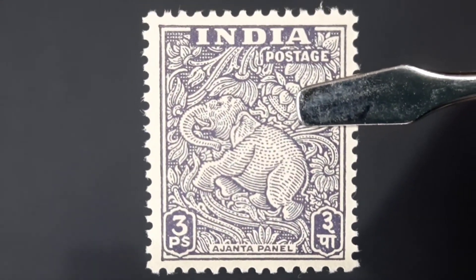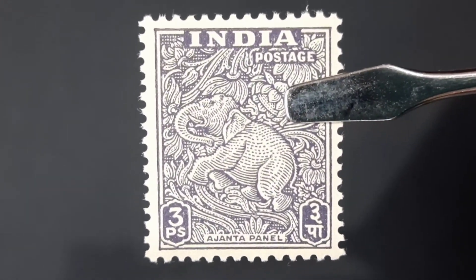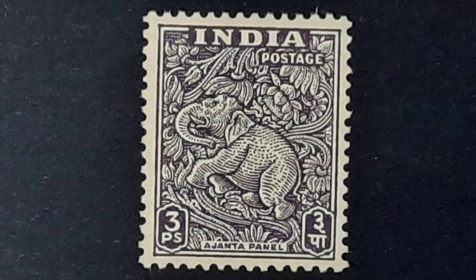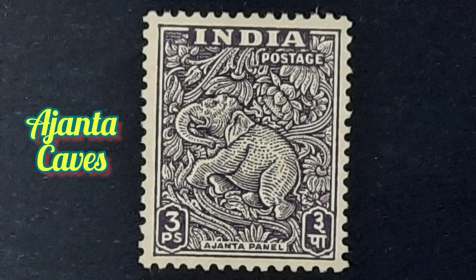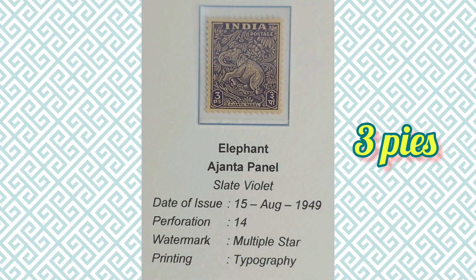The first issue of this series is the three pie stamp. The image depicted in this stamp is an elephant panel from the famous Ajanta Caves, which are the rock-cut Buddhist cave monuments dating from 2nd century BC to 480 AD. The philatelic information of this stamp is described here.